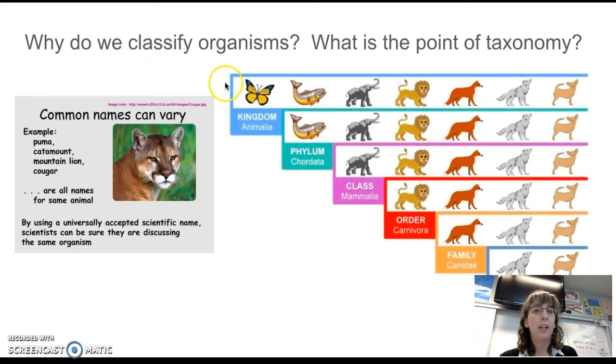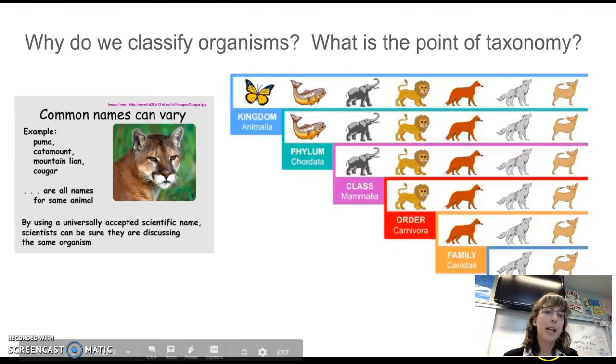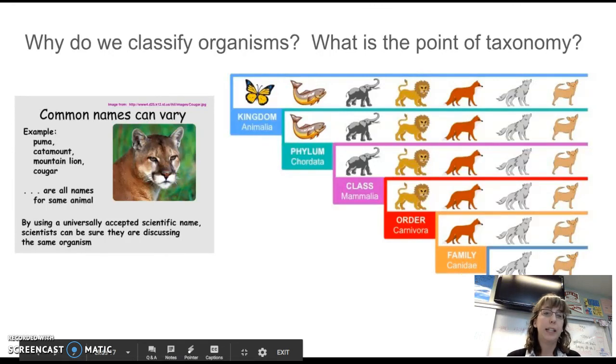It also allows us to confer relationships. For example, by looking at this, looking at the classification, you can see how much things are related. So looking at a dog and a butterfly, they both belong to kingdom animalia, but as you can see as you go down to phylum, that is where their similarities stop. All the way down, you can see that at the more specific taxa or taxonomic classifications, dogs are most closely related to wolves and foxes.